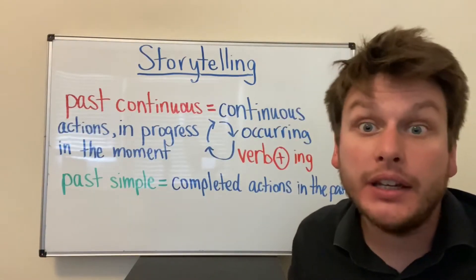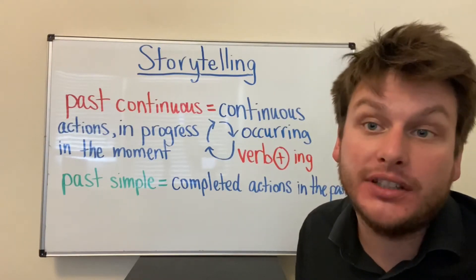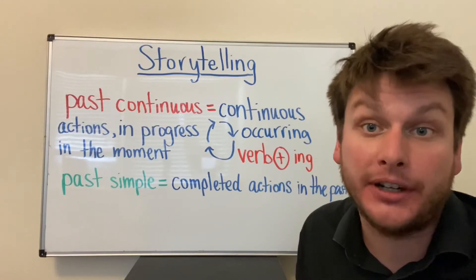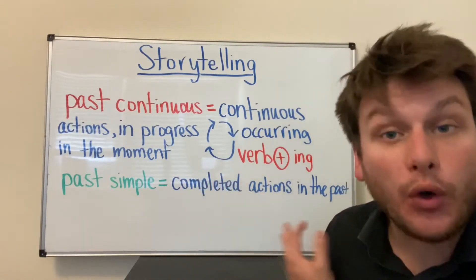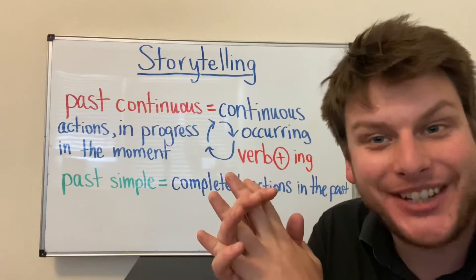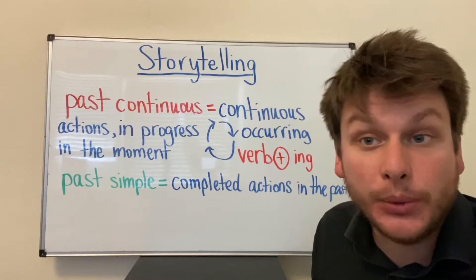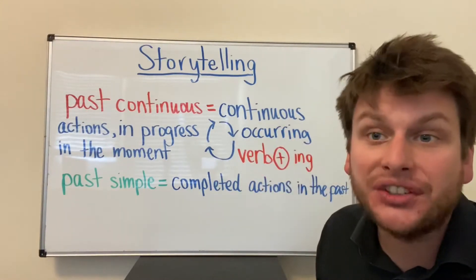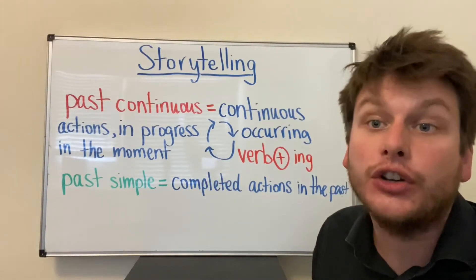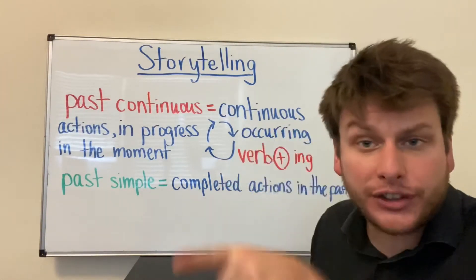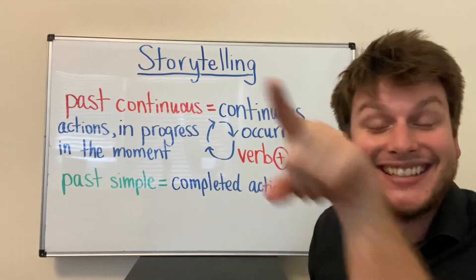When we tell a story, we are talking about the past. So we use the past continuous and past simple grammar. In fact, it's common and natural to use both of these grammars interchangeably while you are telling your story. The past continuous is for continuous actions which were in progress and occurring in the moment — that's what this symbol means. Verb plus ing. Ing means continuous.